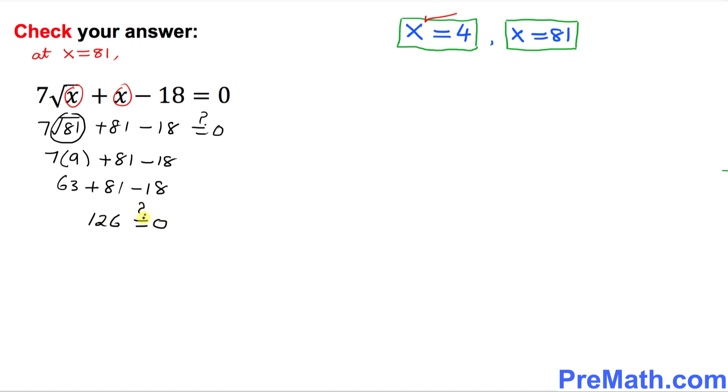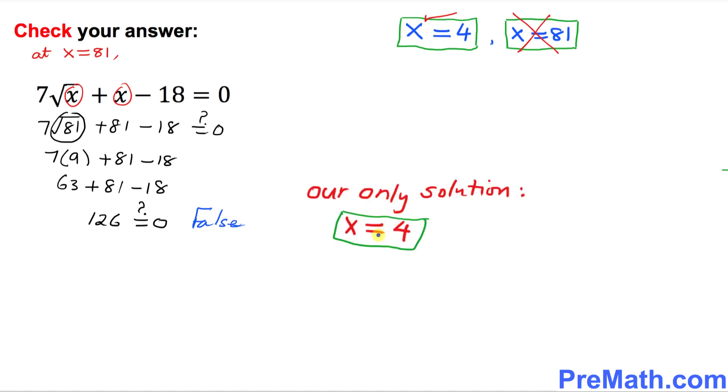And the right hand side is zero. My question is is the left hand side equal to right hand side? No, that is not true. That is false. So that means x equal to 81 is not a good answer. So our good answer is only x equal to 4. So that's our only solution turns out to be x equal to 4.